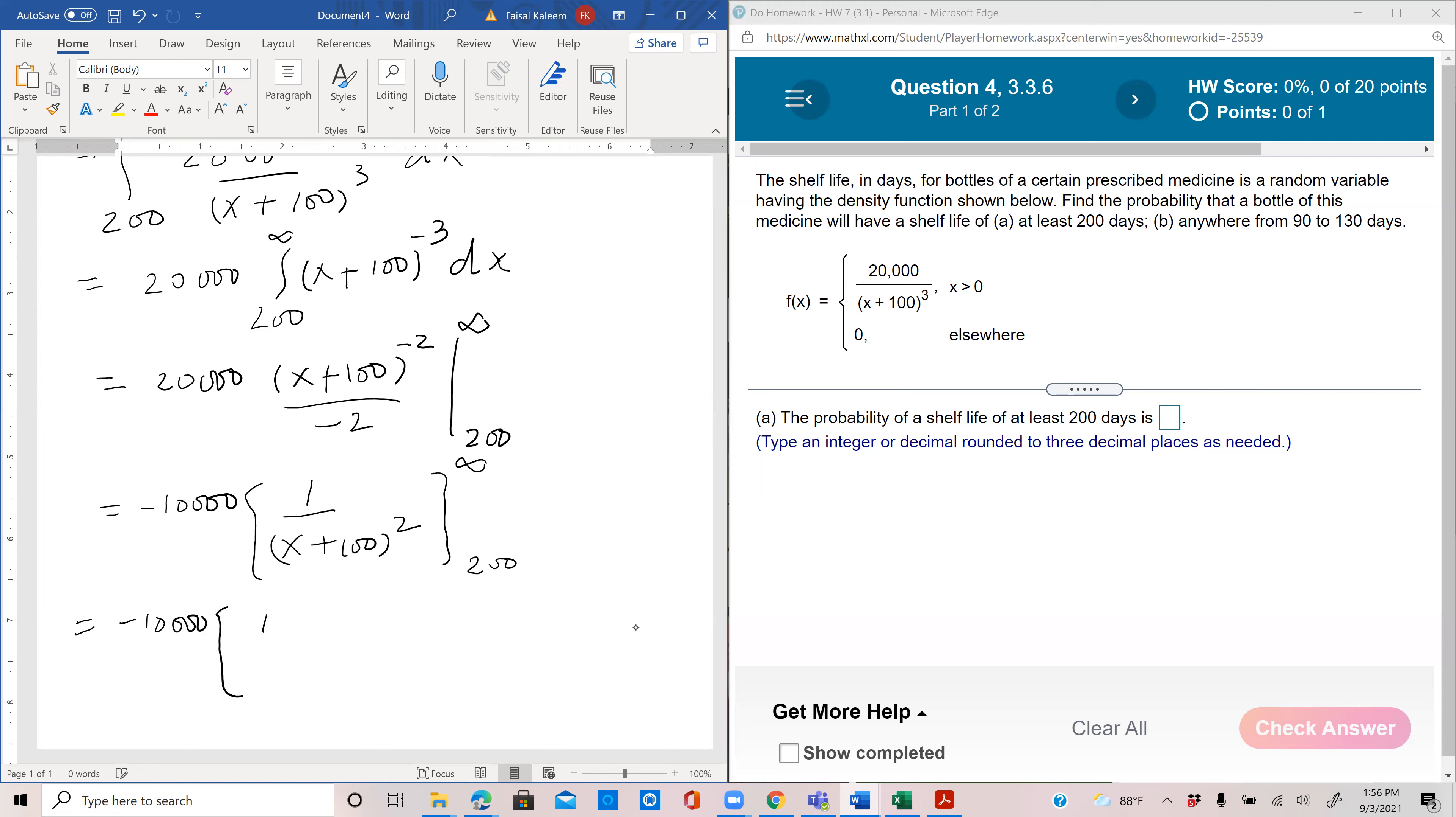So we have 1 over infinity plus 100 minus 1 over 200 plus 100 squared. Now infinity plus 100 is infinity, and you square it, it's still infinity. You have 1 over infinity which is 0, so this part is just gone.